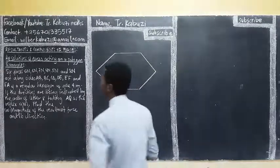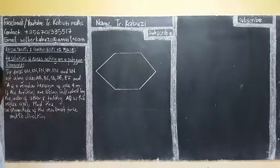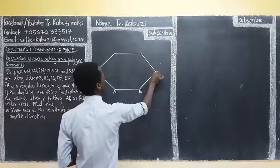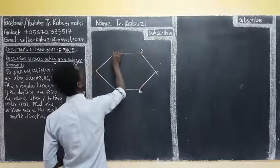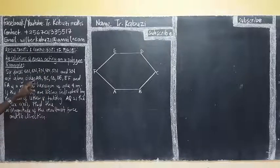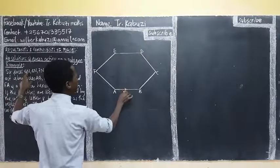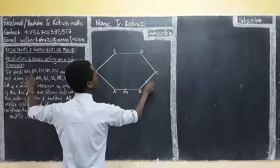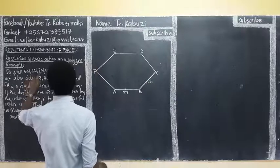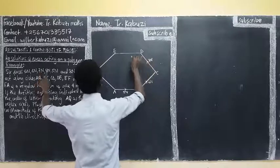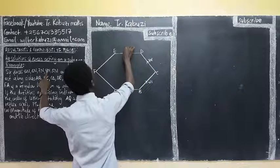Let us start by getting our regular external setup. So this is going to be our A, B, this is C, D, E, then this is going to be our F. After entering at A, B is going to be taking five newtons. Then we have this one taking six newtons. Then we have this one taking seven newtons. Then this one is going to be taking four newtons.